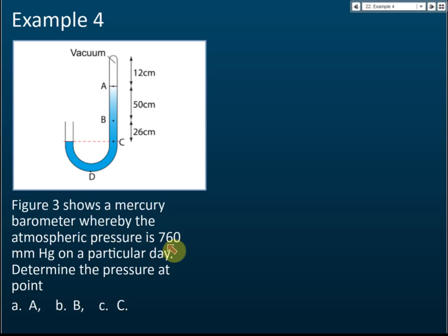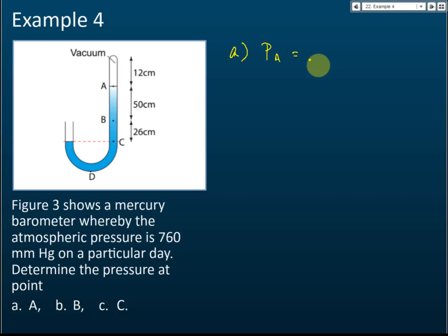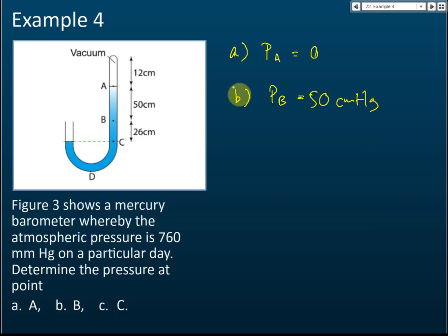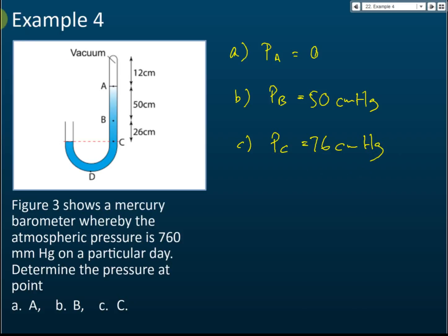Figure three shows a mercury barometer where the atmospheric pressure is 760 mm mercury on a particular day. Determine the pressure at points A, B, and C. Pressure at A is zero — that's correct because it is exposed to vacuum. Pressure at B is 50 cm mercury; the length must be the length of the mercury column from A to B — you don't need to include the vacuum.